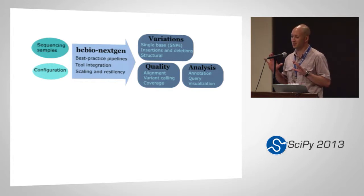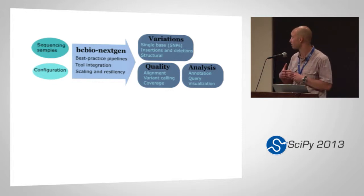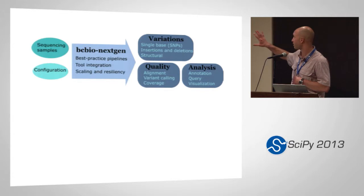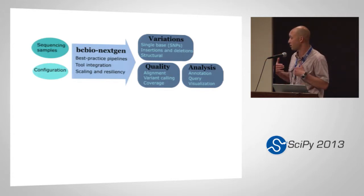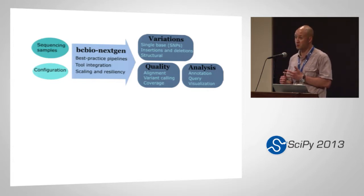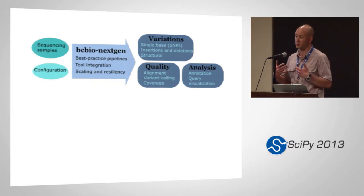It builds at a higher level than people might put together with a bash script or makefiles, and tries to parallelize that. What you get out at the end is variants — basically just differences in the genome. And on top of that, we add quality assessment: how well did your alignment work, how good are your reads, how good is your variant calling, how well did you cover regions you're interested in? All the stuff you need to assess to make a statement about the biology of a sample.